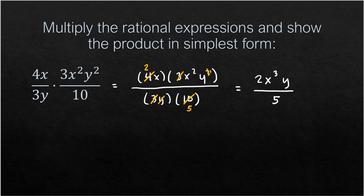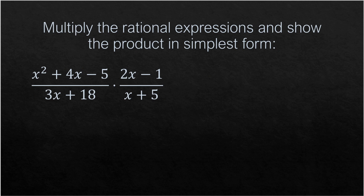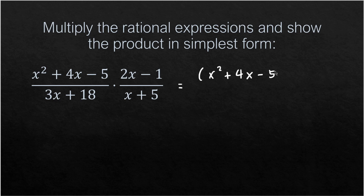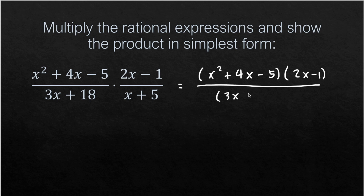Next example: (x²+4x-5)/(3x+18) multiplied by (2x-1)/(x+5). We multiply the numerators together — (x²+4x-5)(2x-1) — all over (3x+18)(x+5).